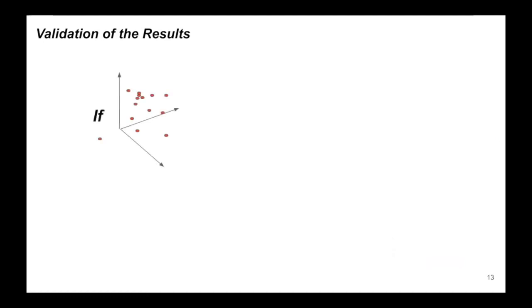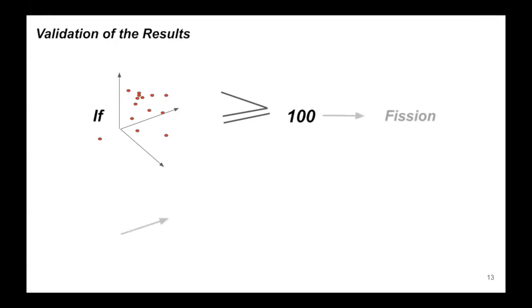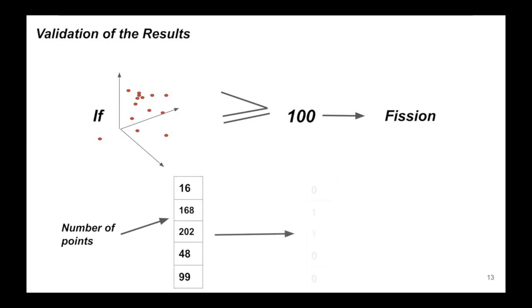Now I'll tell you exactly what was done, and here it's necessary to clarify how we check the veracity of results. Since we are dealing with unlabeled data, the classical approach is no longer suitable. It comes to the rescue that we know fission events are those in which there are more than or equal to 100 points. Therefore, we artificially label the data in order to validate our results, and after that we compare our results using metrics such as F1 score and confusion matrices.